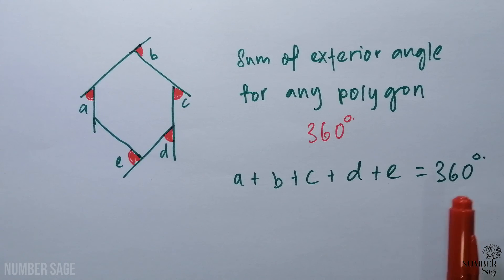The 360 degrees is applicable for any type of polygons. For example, a rectangle, a pentagon, or hexagon, or heptagon. So all polygons will have a sum of exterior angle of 360 degrees.